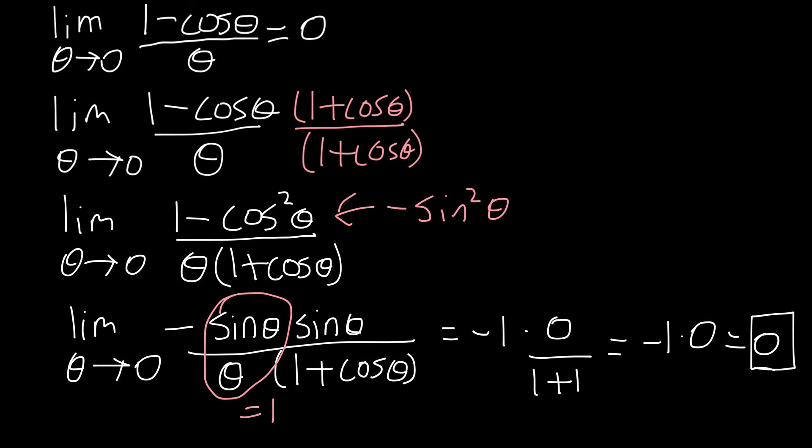And so, we can say that the limit, our original limit here as theta goes to 0 of 1 minus cos theta over theta, does indeed equal 0.